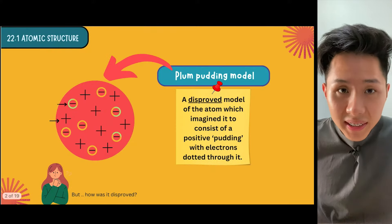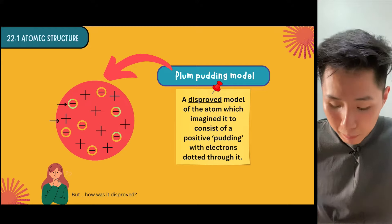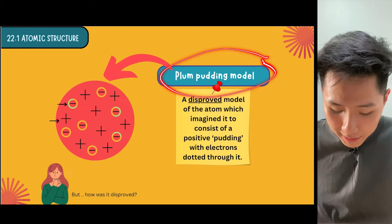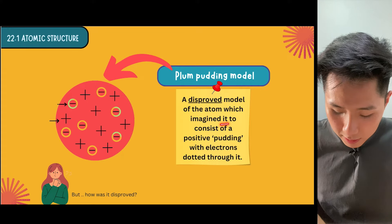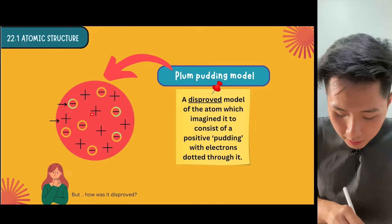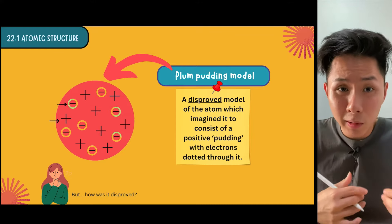Initially scientists thought that the nucleus follows this model called the plum pudding model. It is a disproved model of the atom which imagined it to consist of a positive pudding, like the protons here, and the electrons on the other side.